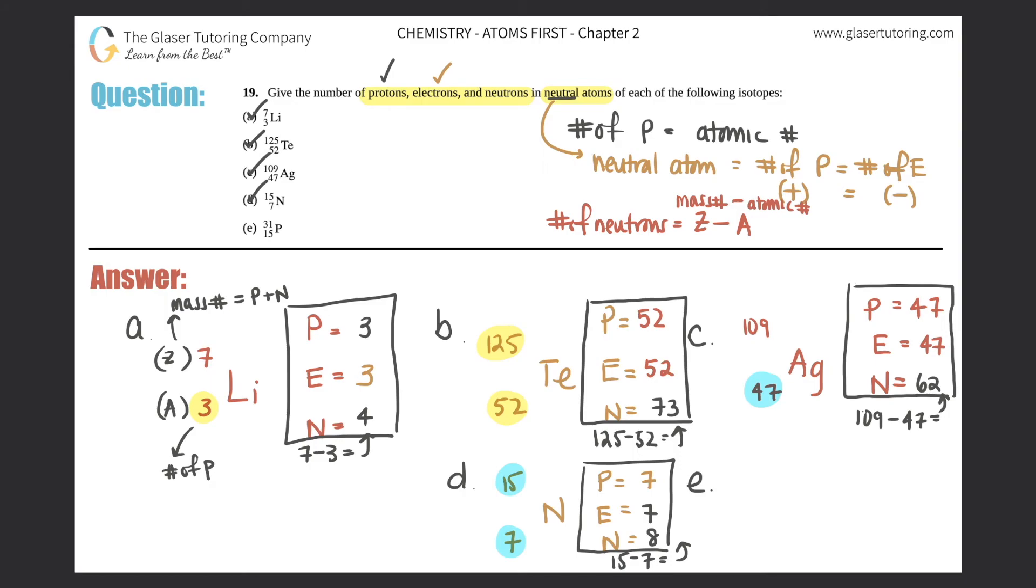And last but not least, we got phosphorus, P, 31 up top, 15 on the bottom. Protons, electrons, neutrons. Protons are at the bottom, 15. That's the atomic number. It's neutral, so that means you should have the same amount of electrons as protons, so they're both 15. And then 31 minus 15, mass number minus atomic number, will always get you your neutrons. So 31 minus 15 is 16. So in this sample, you'll have 16 neutrons, and then 15 protons, and 15 electrons. And that's your answer for E.